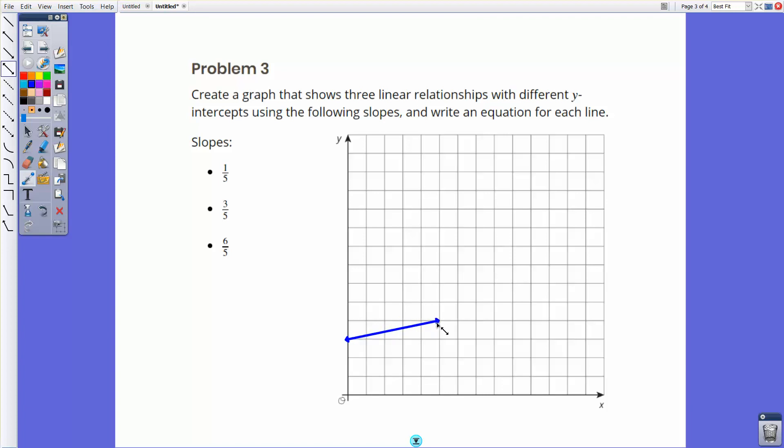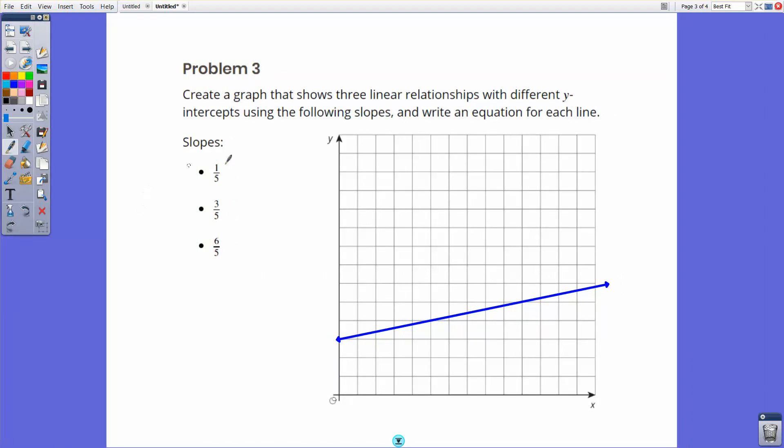So that means if I go up one, I'm going to go one, two, three, four, five over. And every time I would do that, I'm just going to extend this all the way through the grid. So that's one, two, three, four, five right there. Okay, so there's my line. That would be my slope of one fifth.